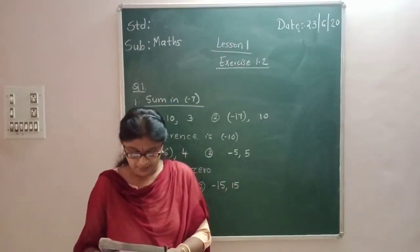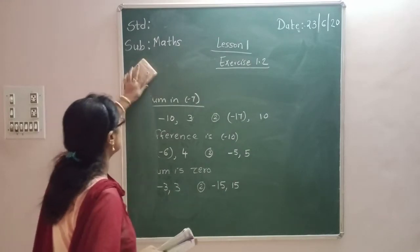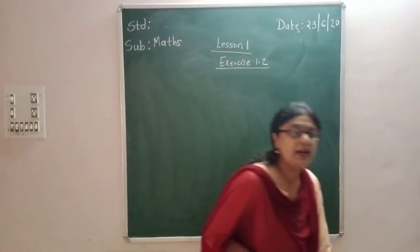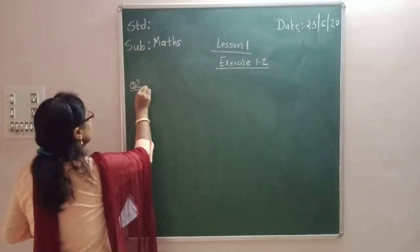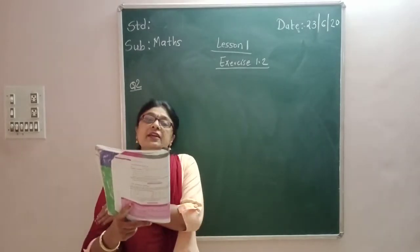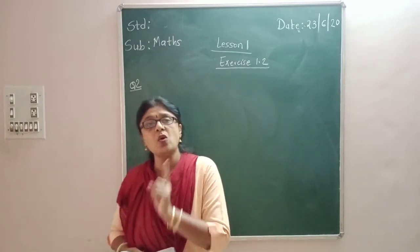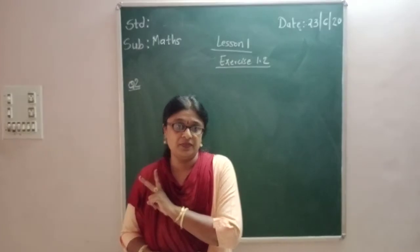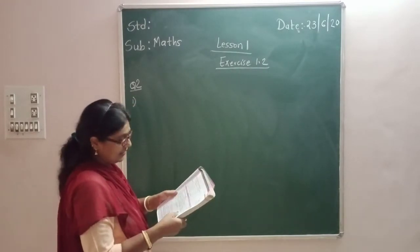So that was question number 1. Now see question number 2. Here the situation is given to you — you have to find the integers provided the situation. Write a pair of negative integers whose difference is 8. Both integers I select should be negative.